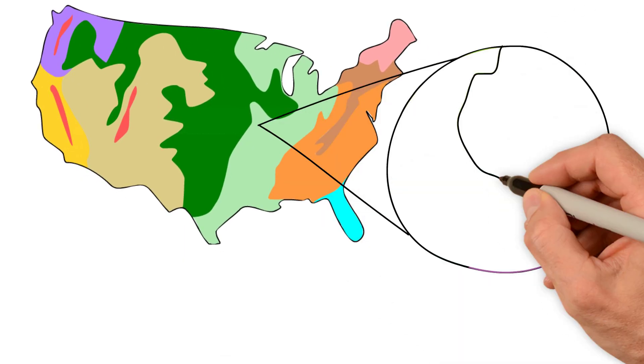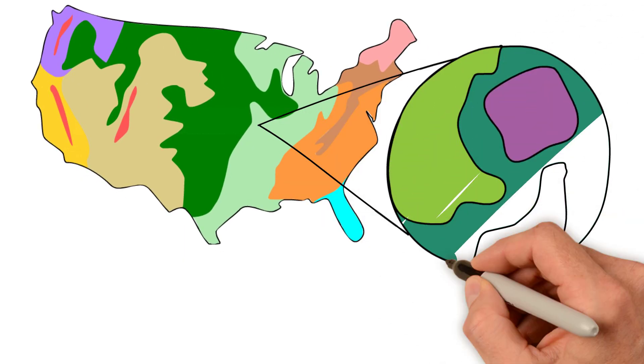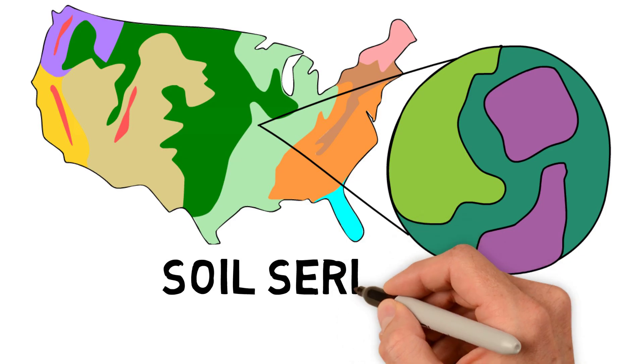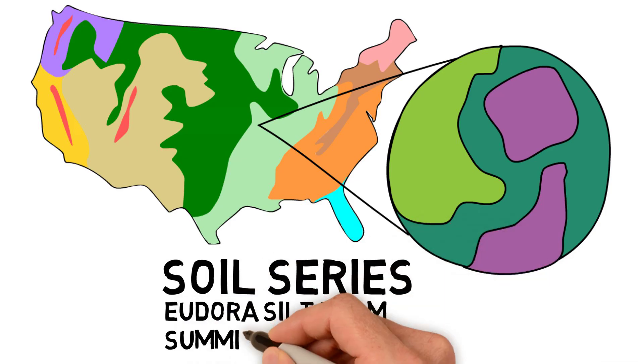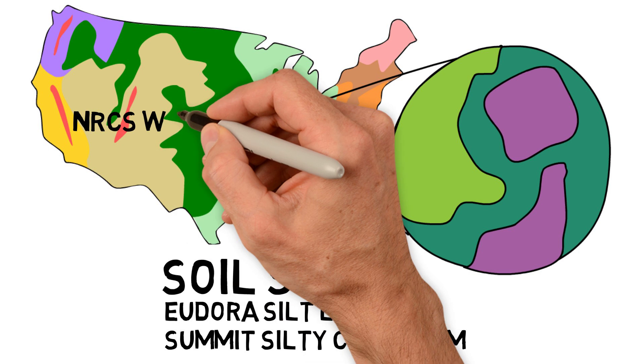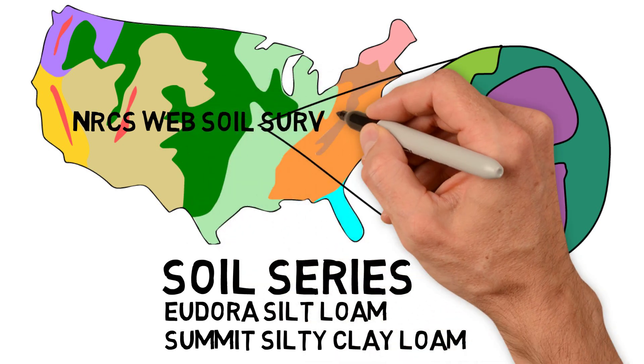At a local level, within each soil order, soils can be further broken down into soil series. In Kansas, for example, you might find the Eudora silt loam, or the Summit silty clay loam. If you're curious about the different types of soils that can be found in your area and their qualities, the best place to find this information is the NRCS Web Soil Survey, which is available online.